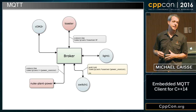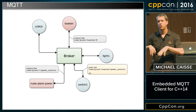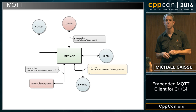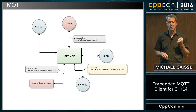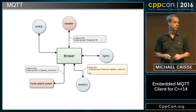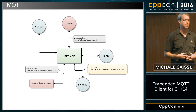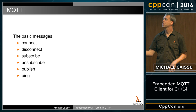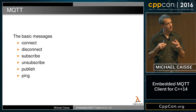There's a lot more involved inside the broker. John has a talk later this week about building a broker, so if you're interested in that go to his talk. A lot of the smarts of MQTT are inside the broker and what it does when clients reconnect. Basic messages in MQTT are very simple: connect, disconnect, subscribe, unsubscribe, publish, and ping. That's it. There's nothing else you can do — a very limited set of messaging — but this provides all the capabilities we need.